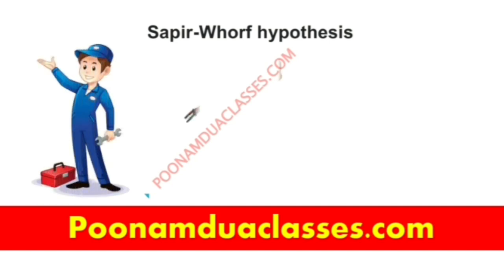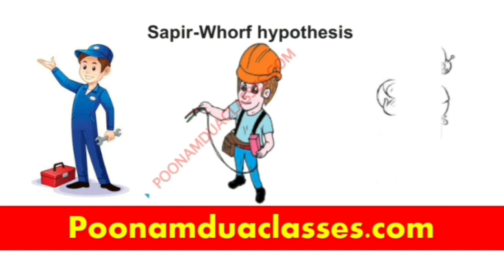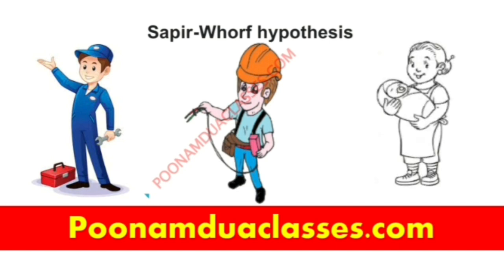By referring to Varun as 'male nurse' and Alia as just 'nurse,' their acquaintances were using language shaped by societal viewpoints — that being a nurse is a women's profession and men should be doctors. The same thing happens with professions like plumber, electrician, and nanny. We consider plumbers and electricians to be male and nannies to be female. According to this hypothesis, language influences and shapes our cultural reality by limiting our thought processes.